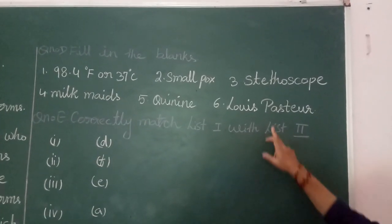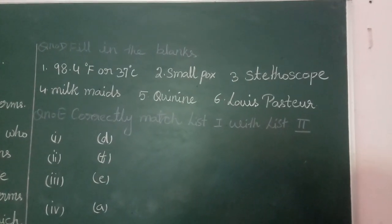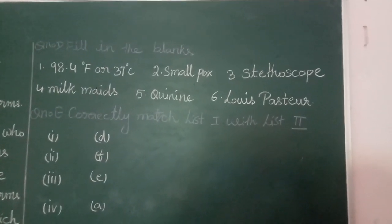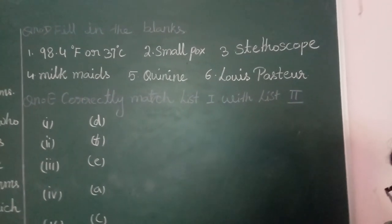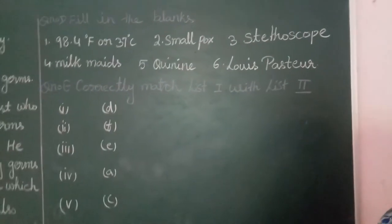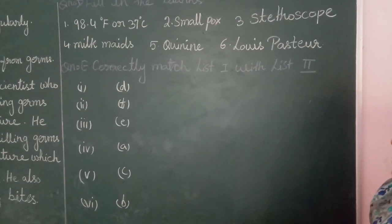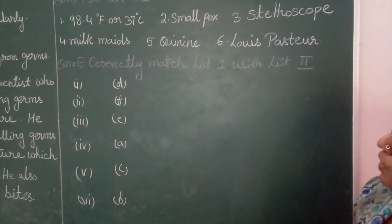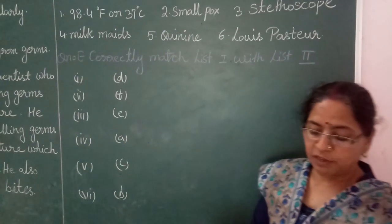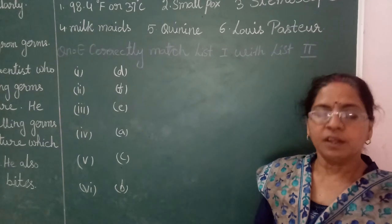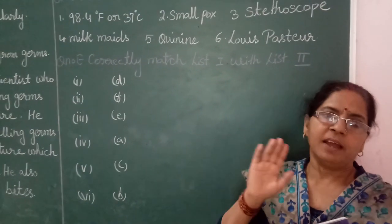Number 6: Louis Pasteur. Number 7: Galileo was a famous scientist. The matching exercise you will do from the blackboard. So dear students, in this way the lesson is now completed. Have a nice day.